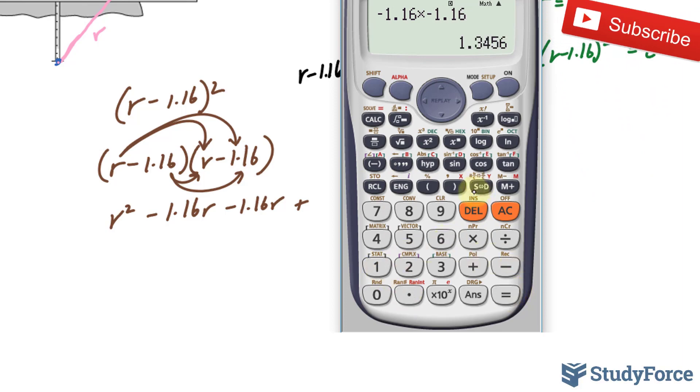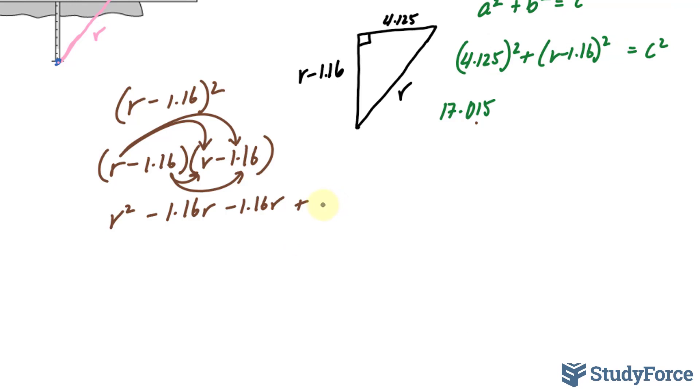And that is positive 1.34, 1.3456, and we'll keep a few more numbers, 5, 6. Combining these two, we get r squared minus 2.32r plus 1.3456.